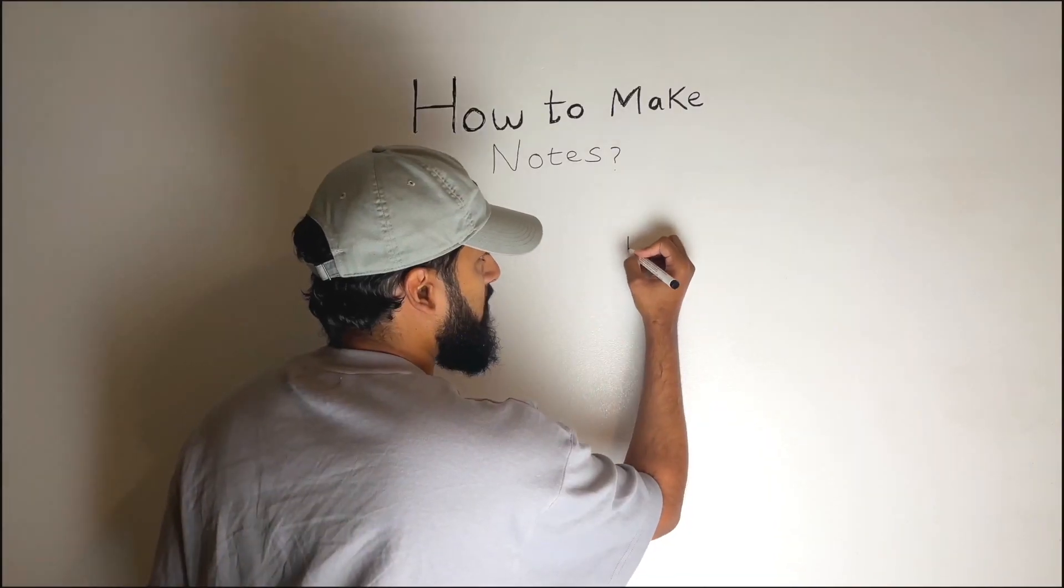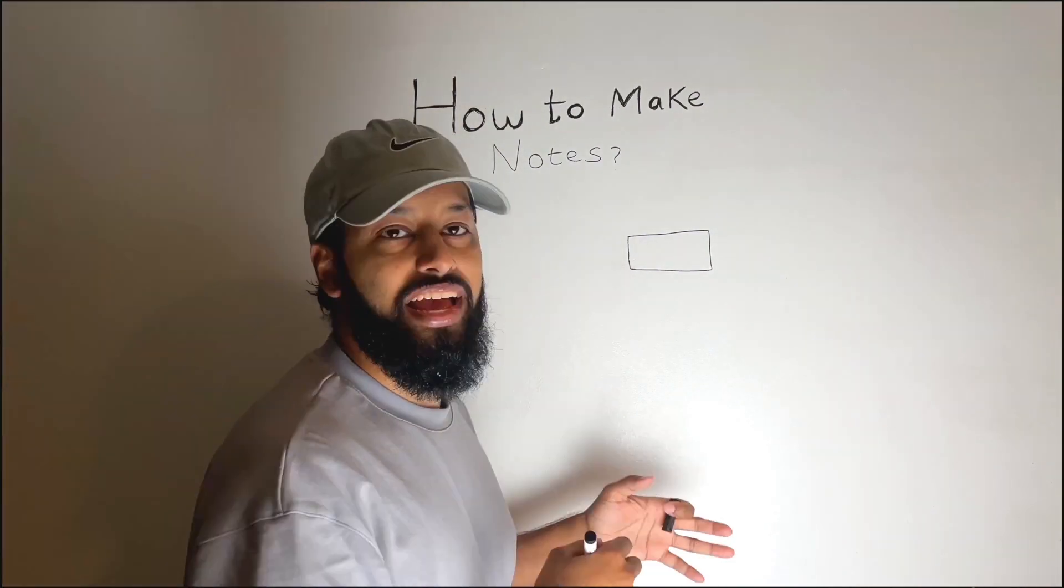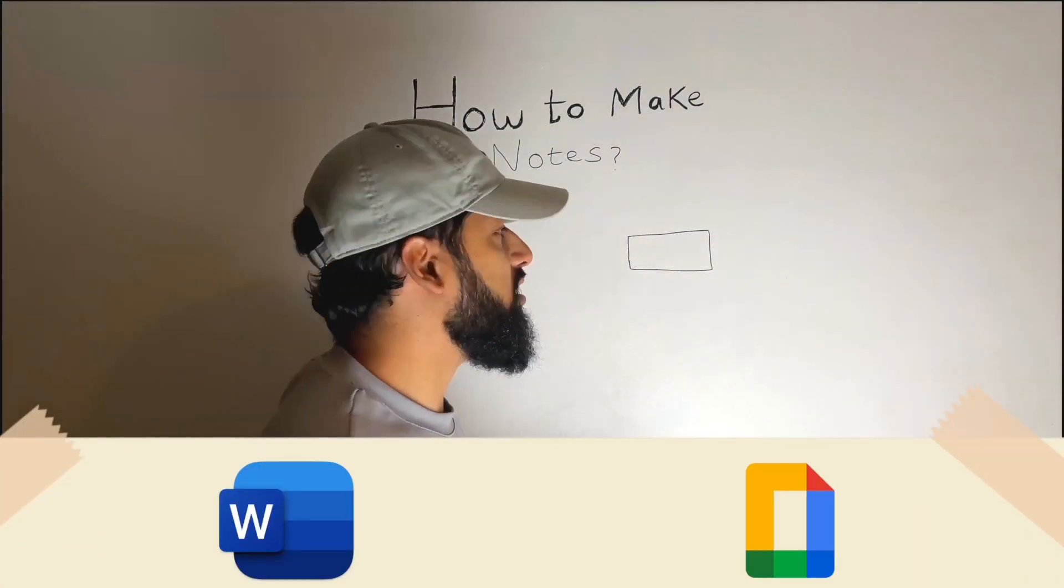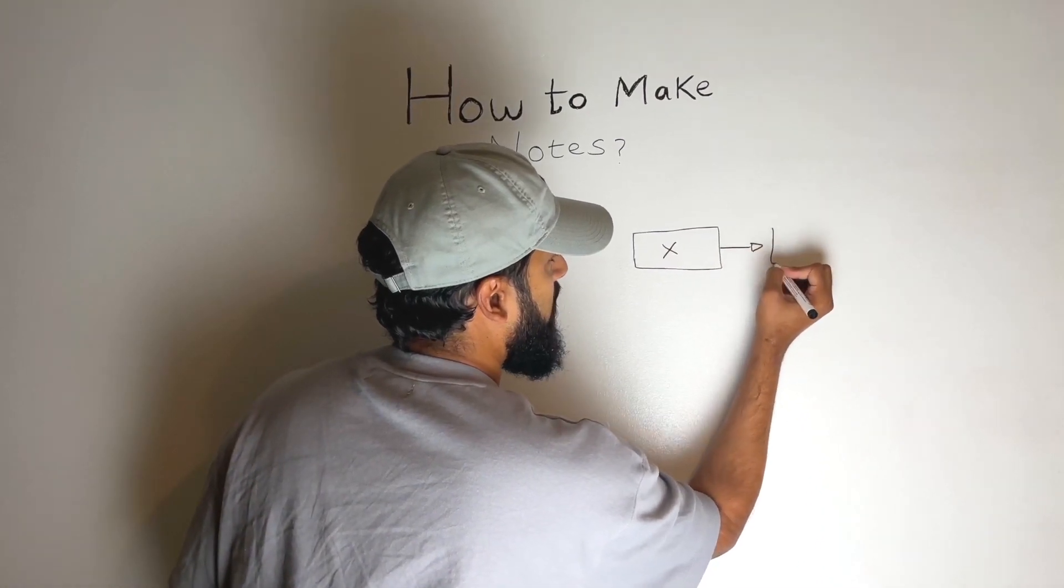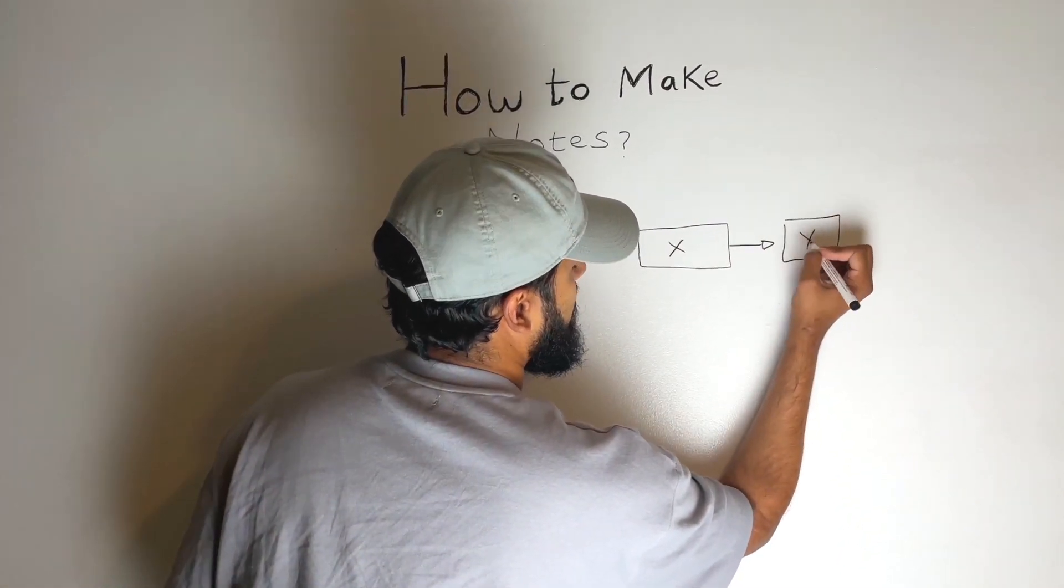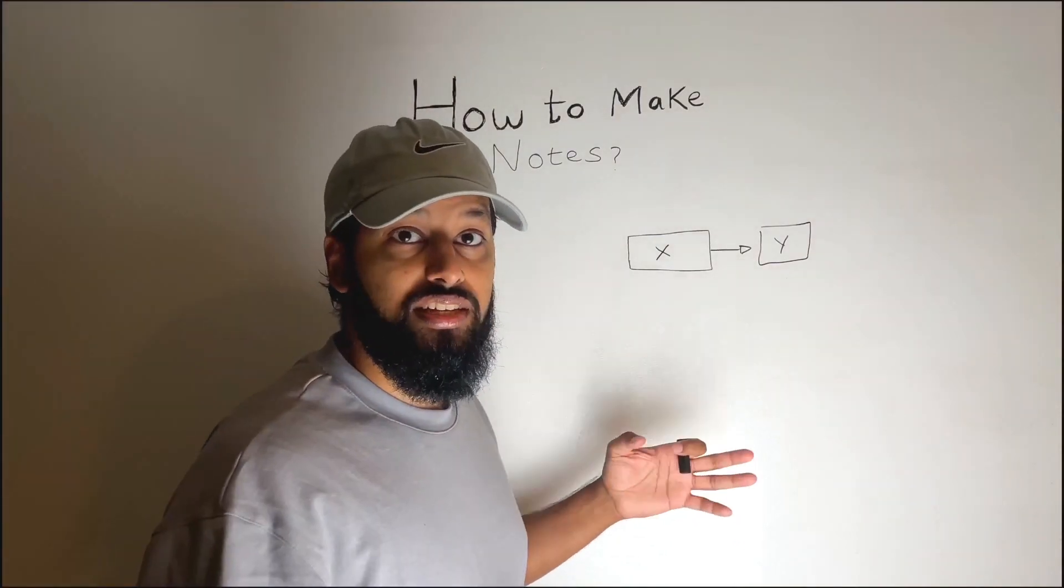For example, you want to talk about the relationship between two entities. Now it's very hard to play around with Microsoft Word or Google Docs to really show how x and y might be related in a scientific principle that you're trying to understand. It is a lot easier to represent this if you are handwriting this stuff.